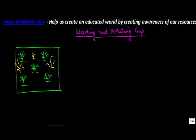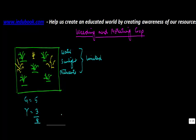What happens is that the soil, water, sunlight, and nutrients in the soil are all limited. So let's say if you count the green plants, you have 5, and the yellow ones you have 3, total 8.